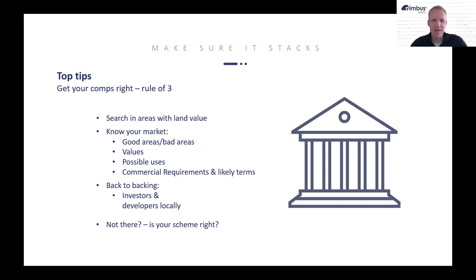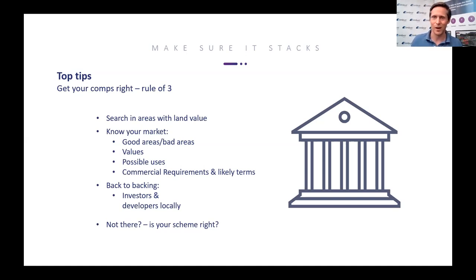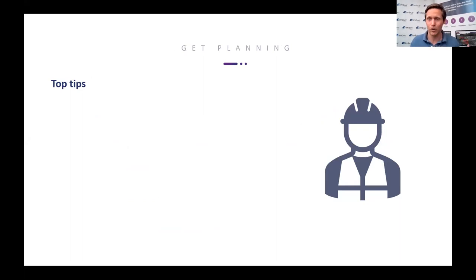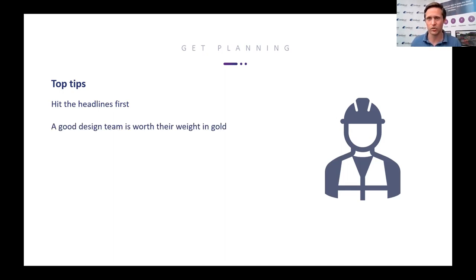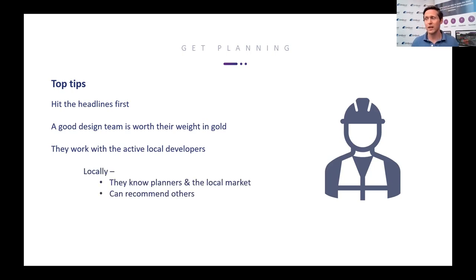Let's hope we get a good example and we can bring our difference of opinion to life. Final things about planning: hitting the planning headlines first is really useful, making sure things don't flood or sit on the green belt. A good design team is worth their weight in gold — they'll work with local active developers, know the planners, know that local marketplace, and recommend others on a decent design team they've worked with. Getting a good architect will bring you a decent QS, a decent M&E consultant, pulling them together off similar schemes elsewhere.